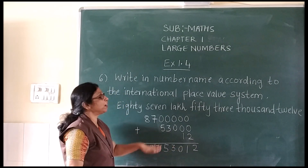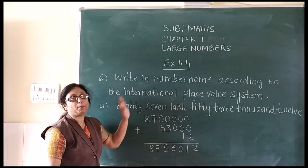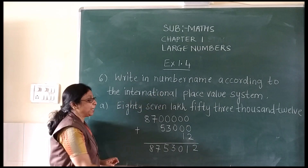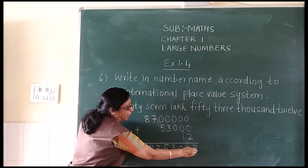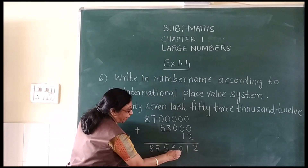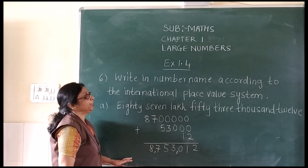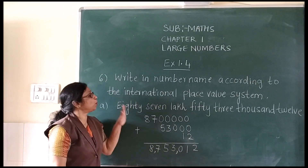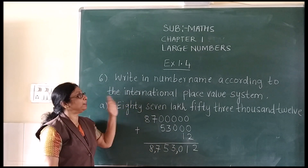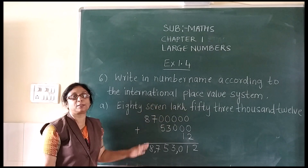So you will write in the international place value. Place the commas in the form of 1, 2, 3 — 1, 2, 3. In this way you can write the international place value system.